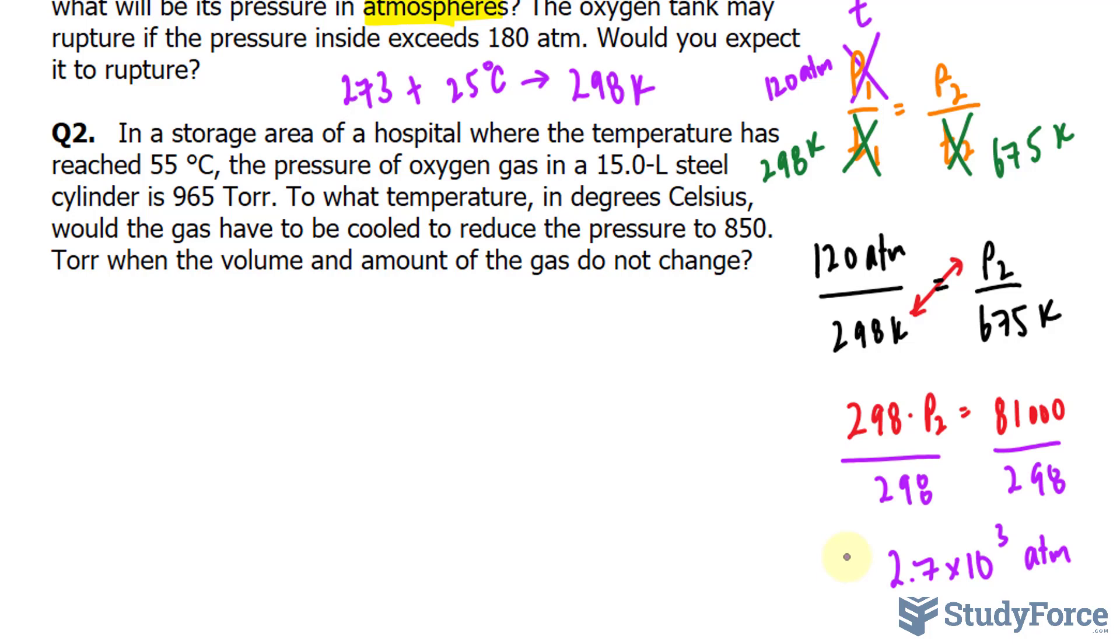In question number two, in a storage area of a hospital where the temperature has reached 55°C, the pressure of oxygen gas in a 15.0 liter steel cylinder is 965 Torr. To what temperature in degrees Celsius would the gas have to be cooled to reduce the pressure to 850 Torr when the volume and the amount of gas do not change?